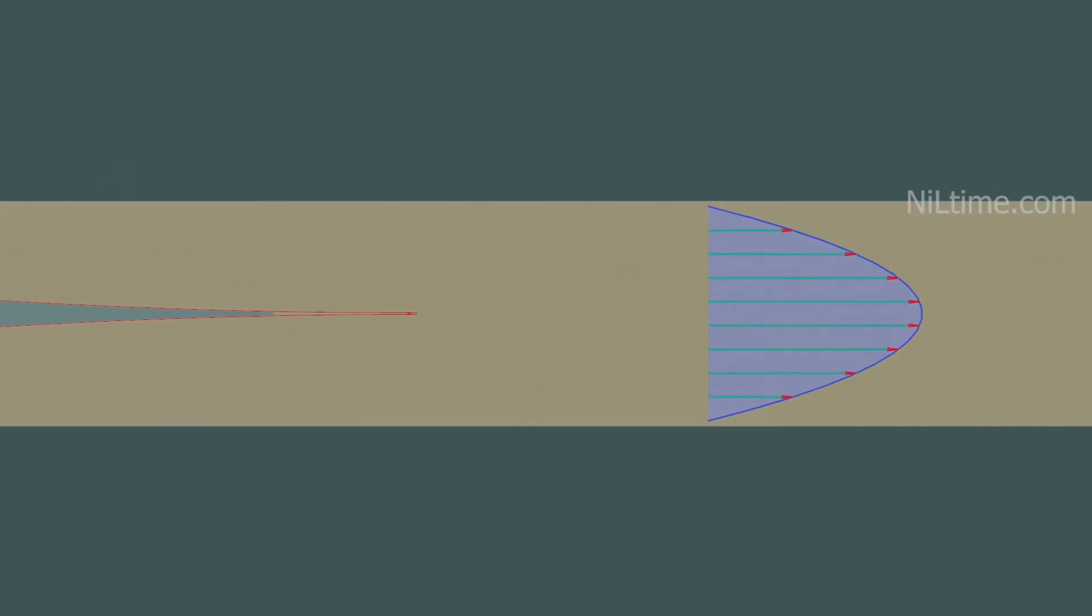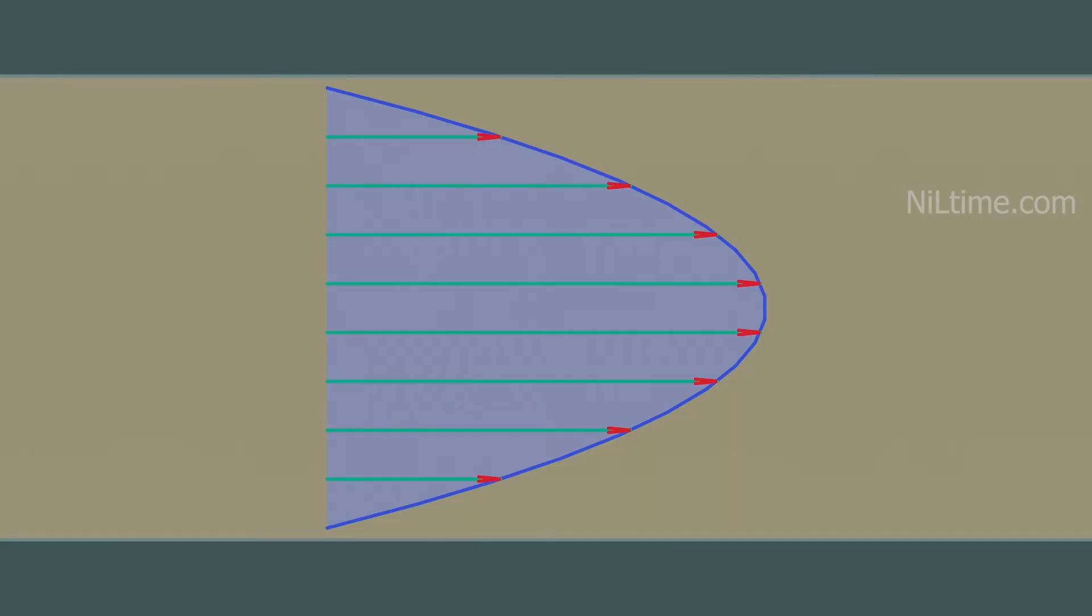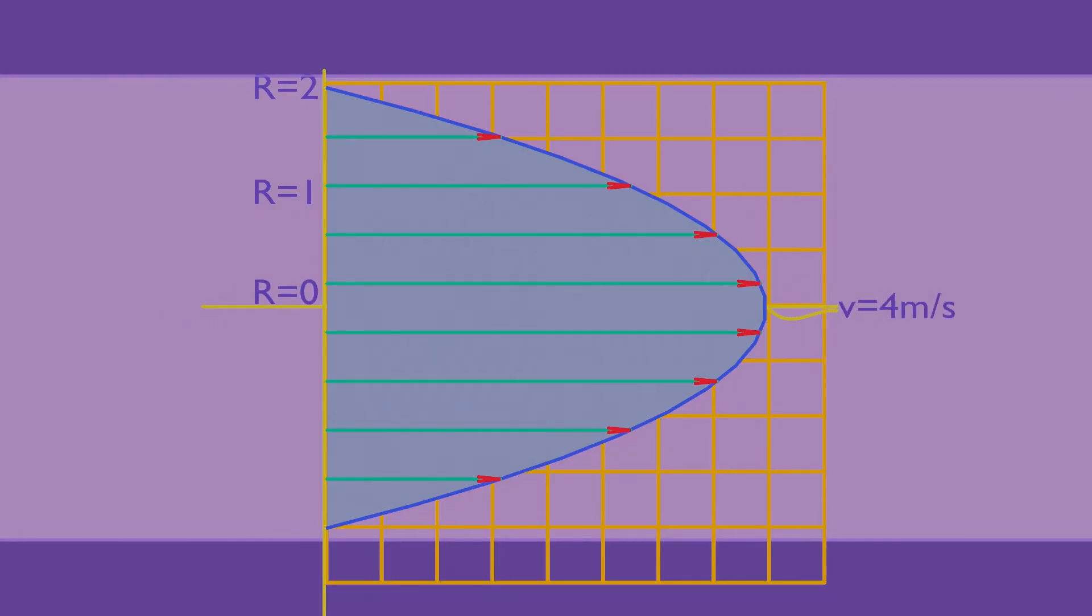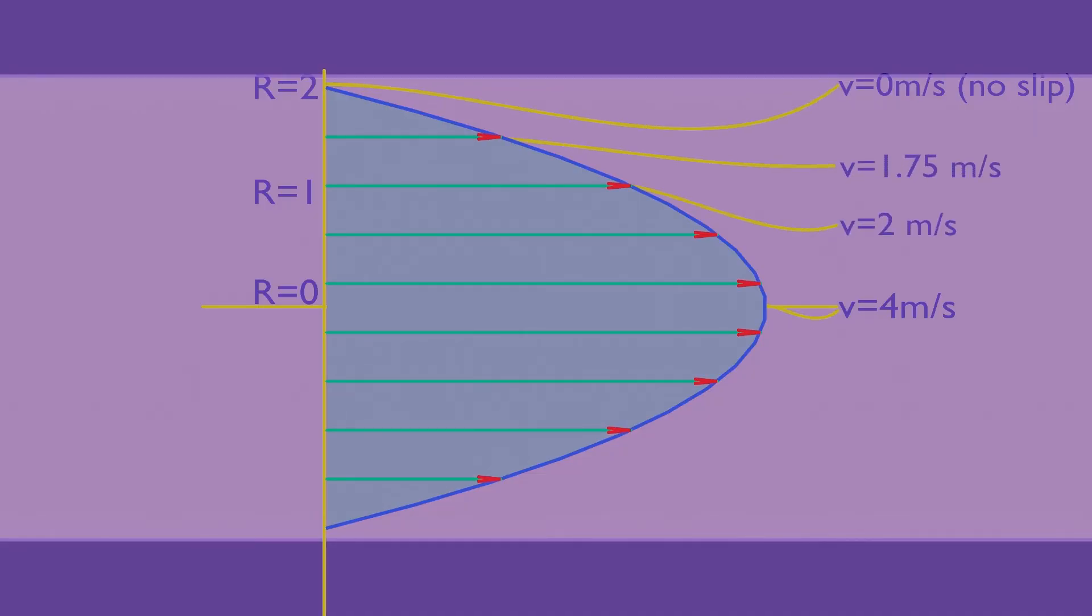So, as you can see the velocity profile, it has different velocities along the radius of the pipe. For example, at the center of the pipe, r equals zero, velocity is 4 meters per second. And similarly, at the complete radius of the pipe, velocity is zero, which is due to the no-slip condition. You can see how the velocity varies radially, and if you plot every velocity as a function of radius, you will get a parabola.